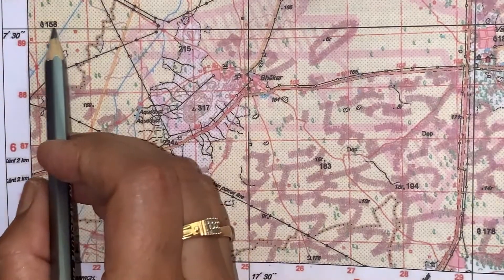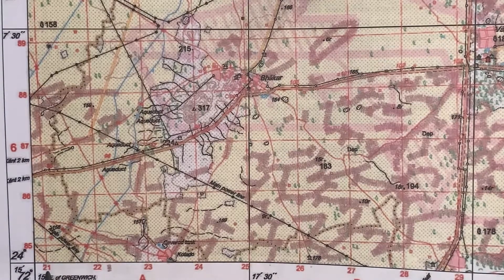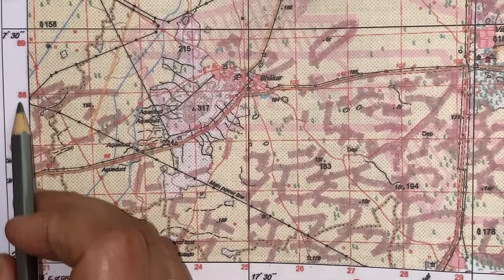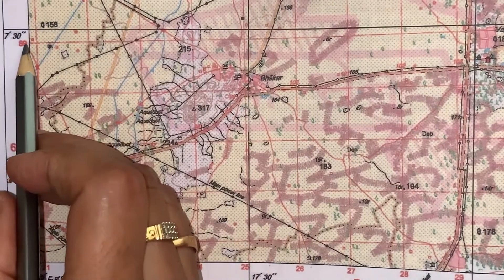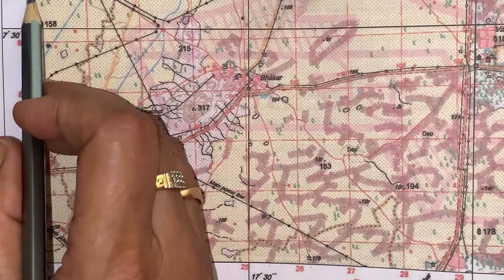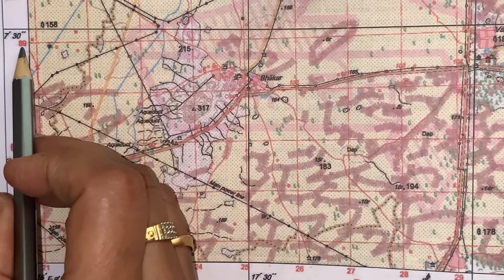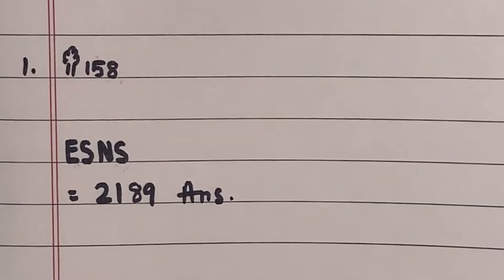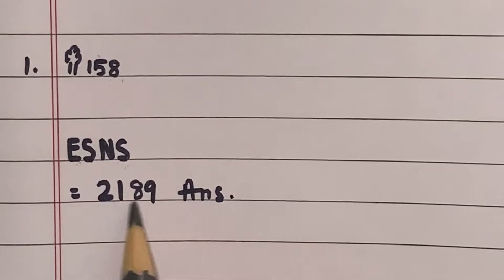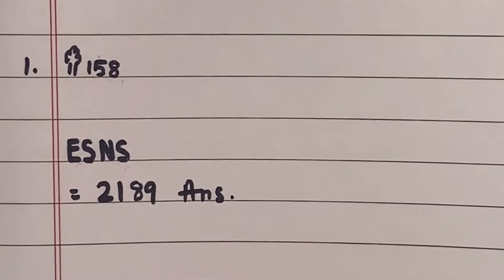We take the first number, that is 21. In Northings it falls between 89 and 90, so we take the first number, that is 89. Thus the answer is 2189.